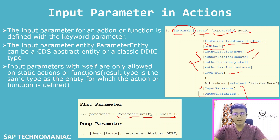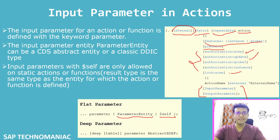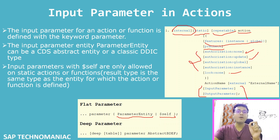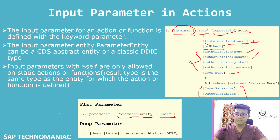If you define %$self as the input parameter for an instance action and you have used the 'use strict' keyword in your behavior definition, you will get an error right there. If you don't use 'use strict,' you will get a runtime error. You cannot define the input parameter for an instance action as %$self; only static actions can use %$self.